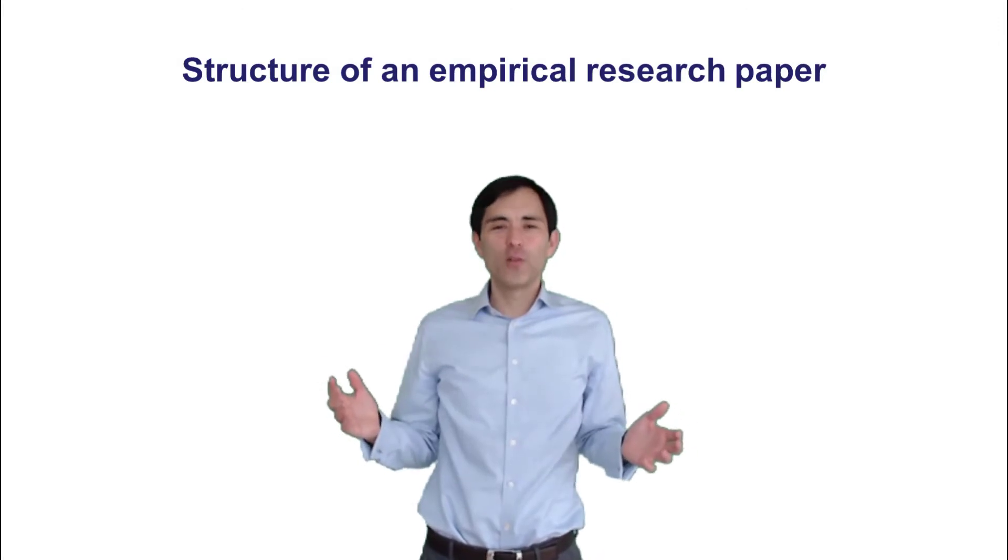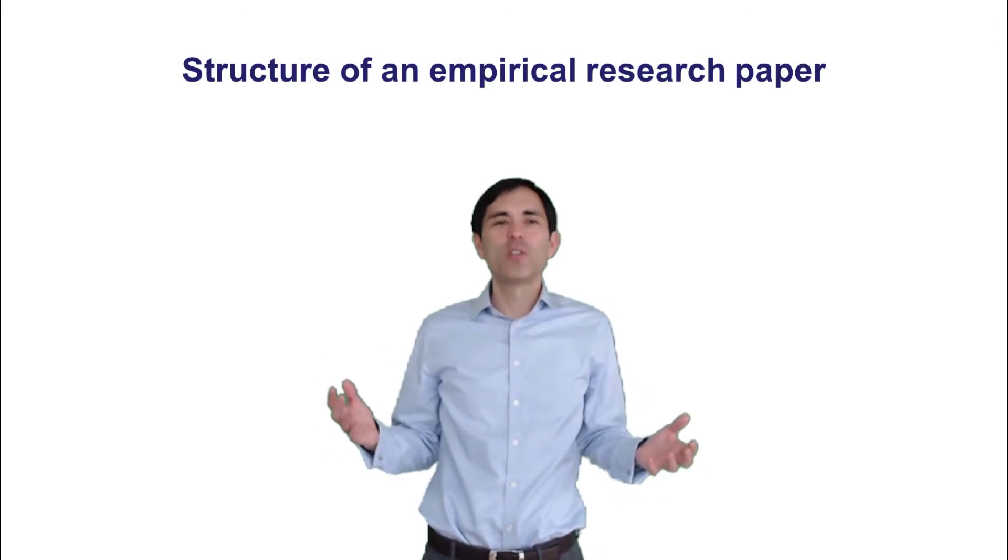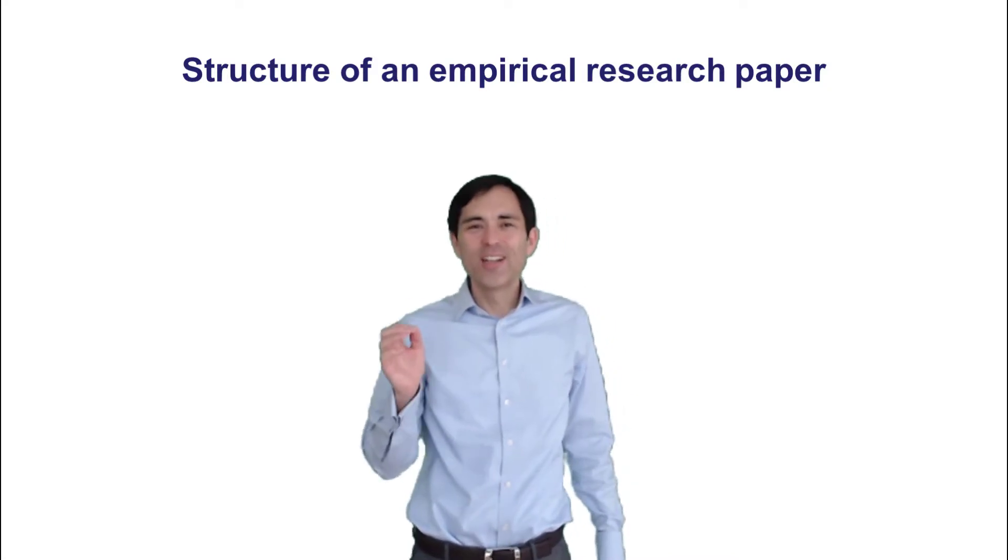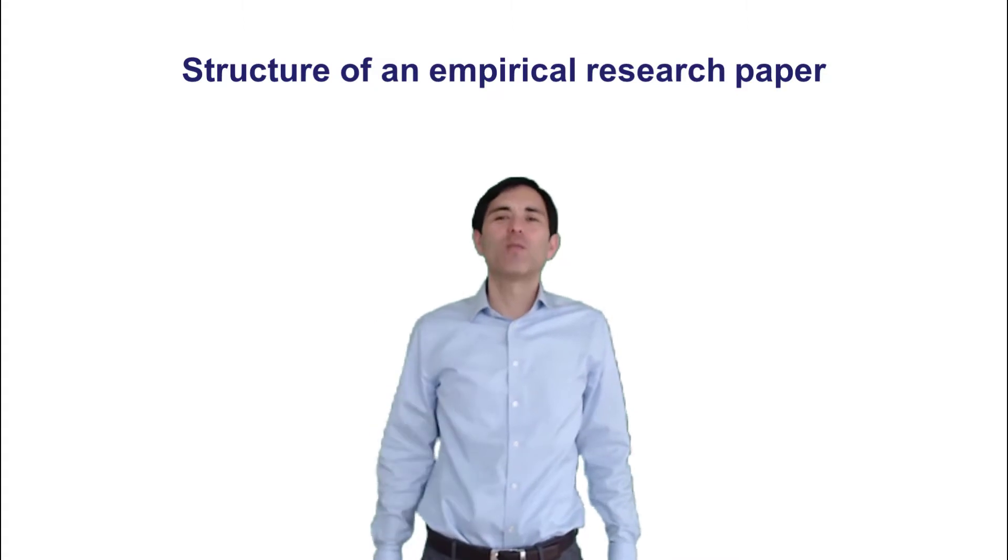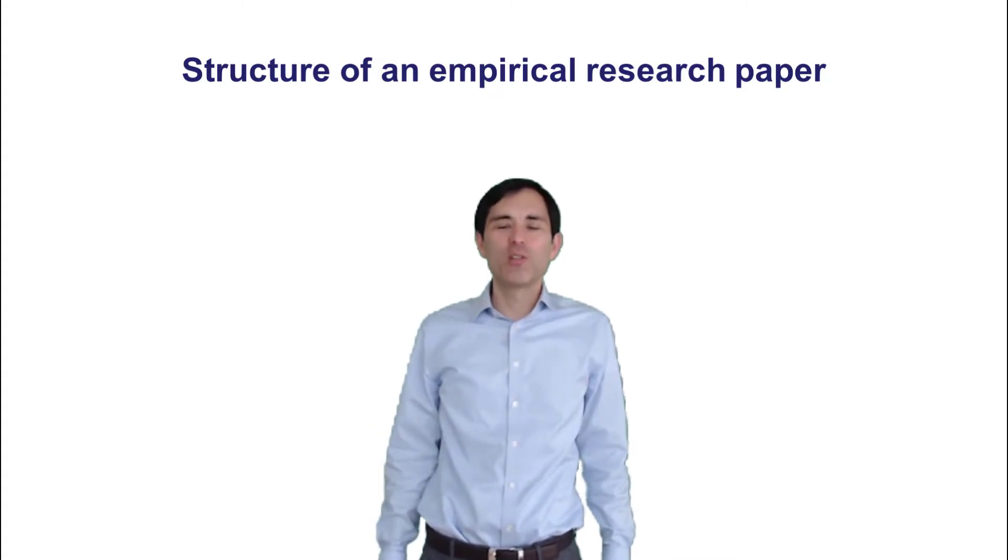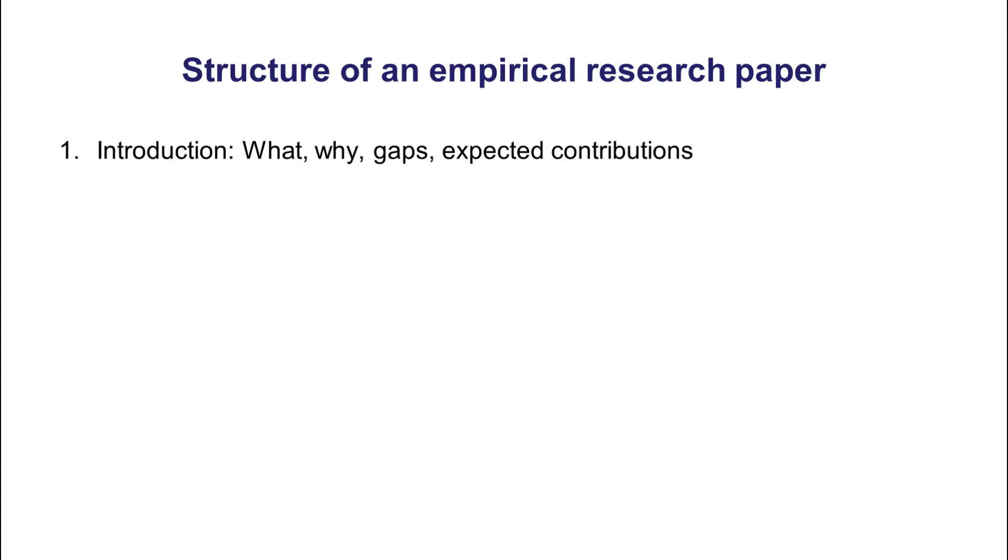After having given you an overview on background of a research paper, now let us look more specifically into the structure of an empirical research paper. Any kind of paper is structured usually into five sections. The first section is the introduction. The introduction will motivate your study. It will explain what it is about, why do we study that, what are the certain gaps, and also what are expected contributions.